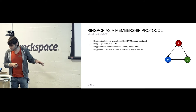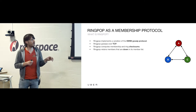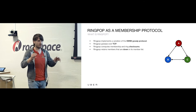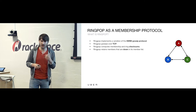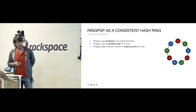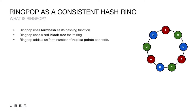In summary, the membership protocol allows nodes to discover one another and eventually leads to a consistent view of the world — but not strictly or strongly consistent. Members discovered via the membership protocol are then placed into the consistent hash ring. RingPop uses FarmHash as its hashing function.